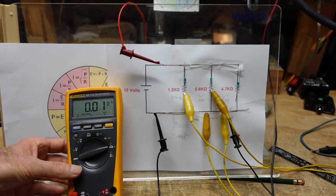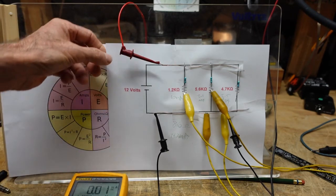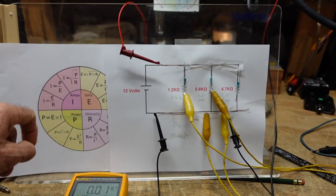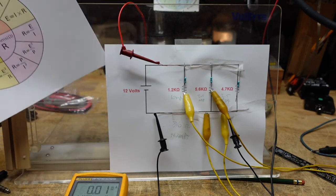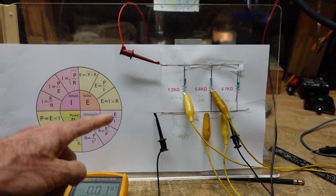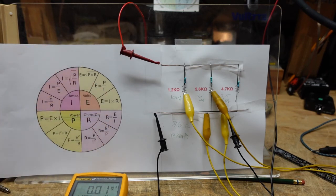Ohm's law is a brilliant tool because of its simplicity. If you have two knowns you can calculate an unknown. There are four quadrants on here as we discussed before: we have power, current, voltage, and resistance.